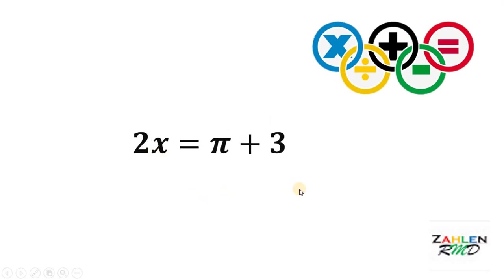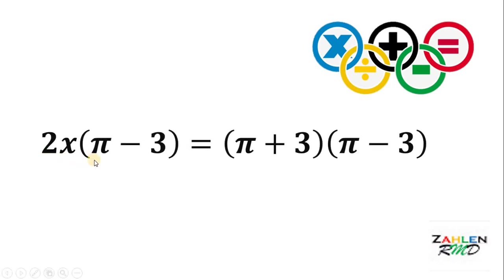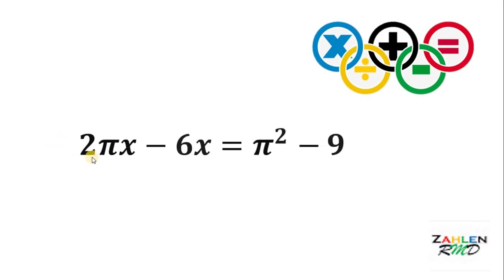Next, multiply both sides by pi minus 3. So we get 2x multiplied by pi minus 3 equals pi plus 3 multiplied by pi minus 3. On the right hand side we can apply special products, and on the left side we can distribute 2x. If we do that, we get 2 pi x minus 6x equals pi squared minus 9.